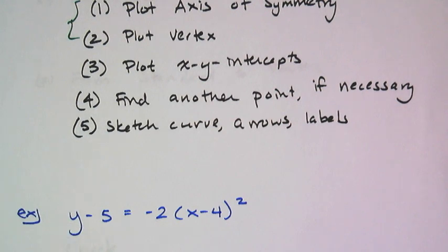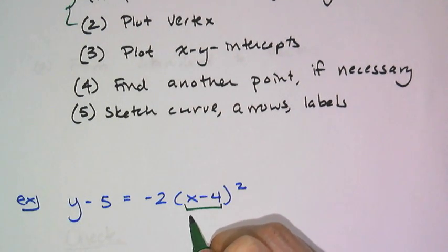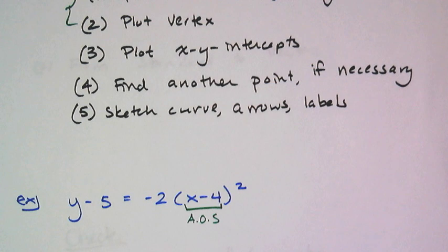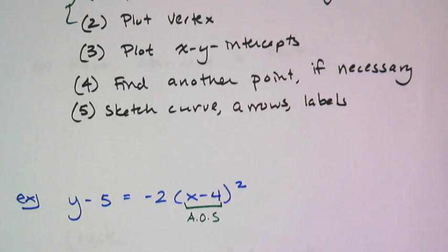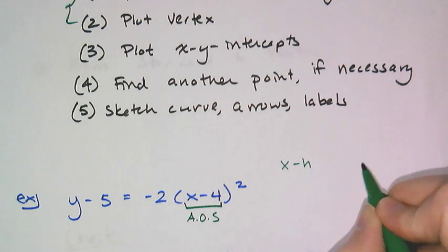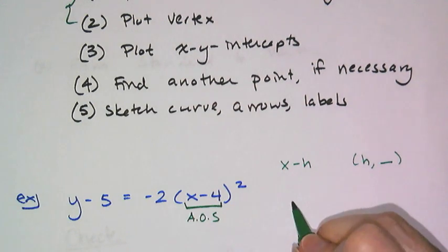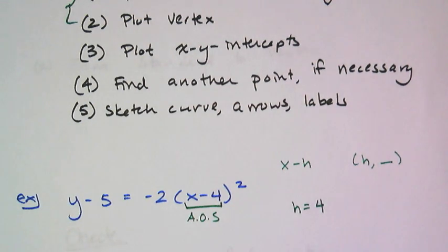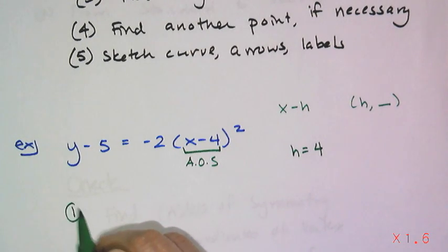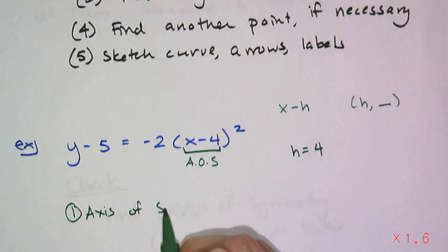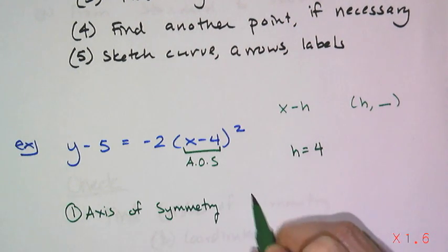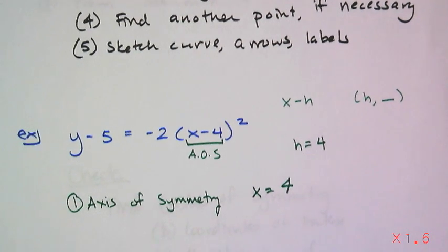Now it's time for us to look at this example and pick out whatever information we can get from it. Now remember that this thing here inside the parentheses is going to give us our axis of symmetry because it is the x value of the vertex. And remember it was x minus h gave you h comma something. And so it's x minus 4, which means in this case h equals 4. And so therefore our axis of symmetry has to be at x equals 4. It's a vertical line at 4.